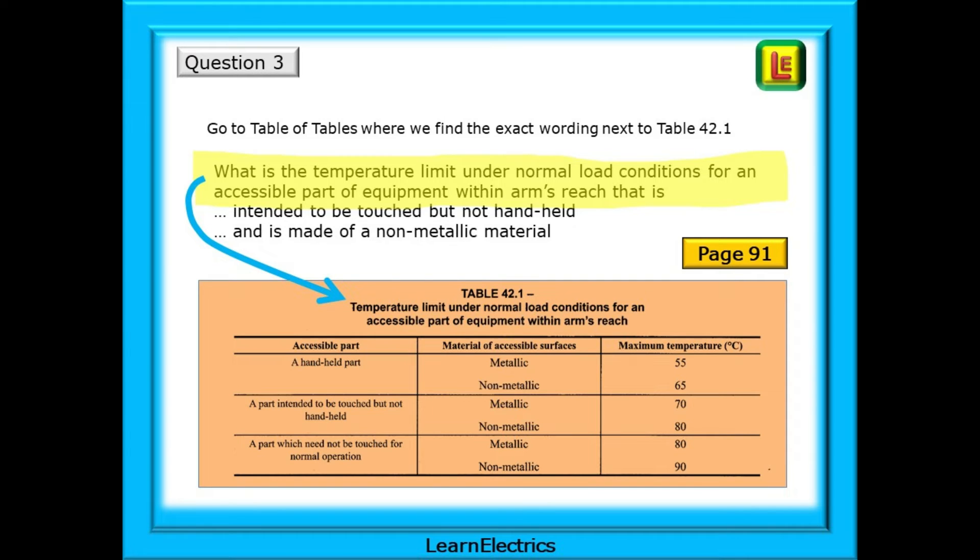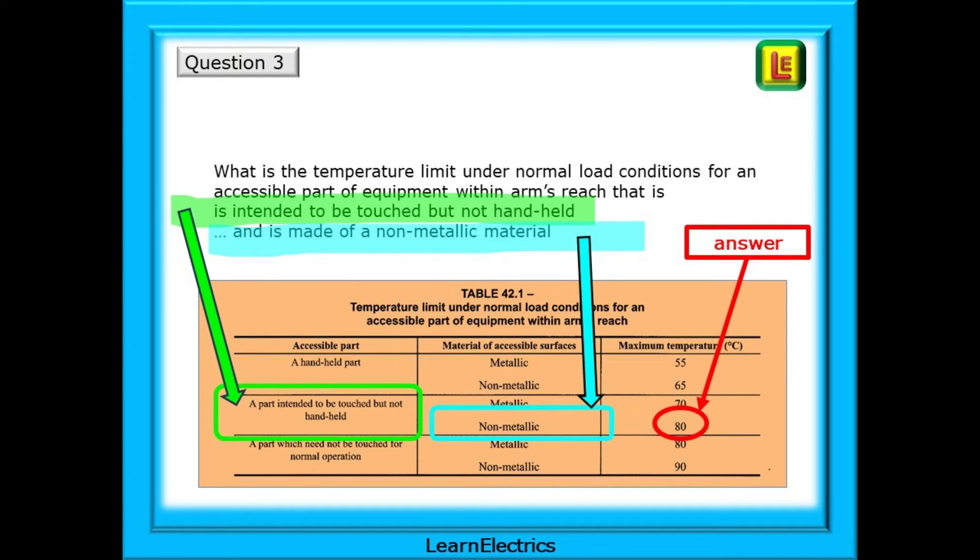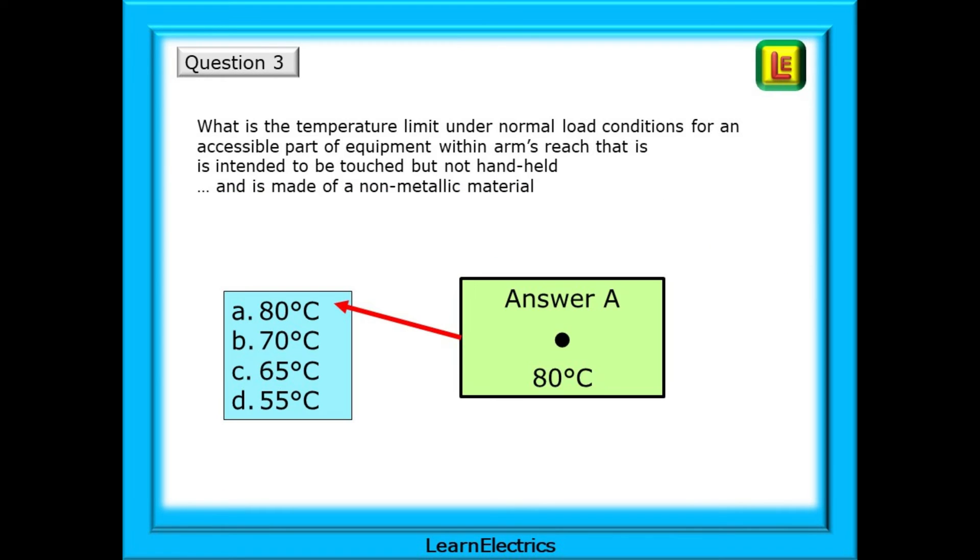Look at the wording of the question, and look at the title of the table. The same words are used. We know that the answer will be in table 42.1. Follow the question. Start with the words, is intended to be touched but not handheld, and follow the green arrow. Then we have the words, is made of a non-metallic material, so follow the blue arrow. The answer must be 80 degrees Celsius. Going back to the answer choices, we have answer A, 80 degrees Celsius maximum.